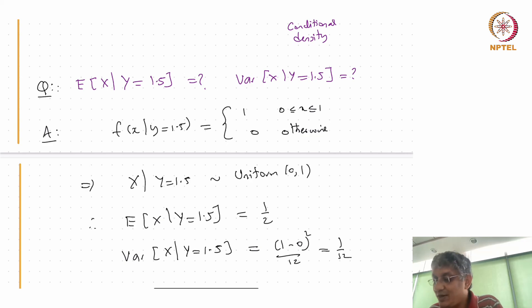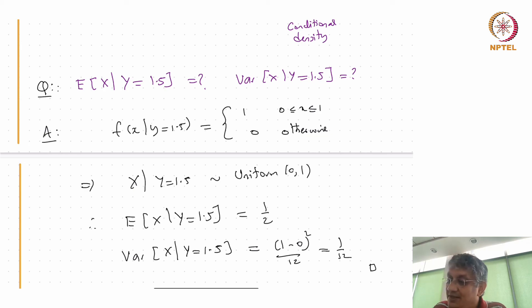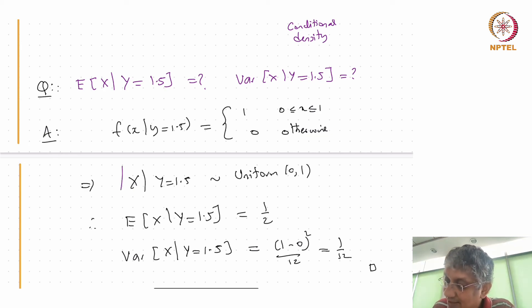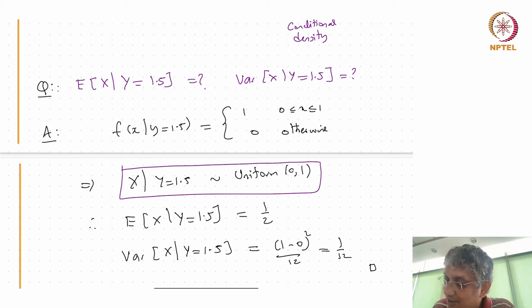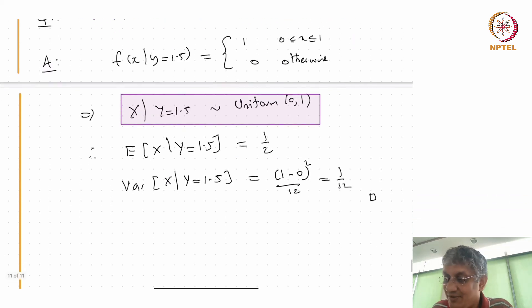So it's quite nice — you get the answer without doing any computation, because the moment you understand that X given Y = 1.5 is uniform, the computation is immediately done.